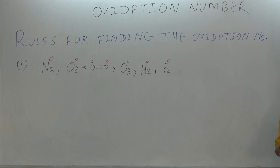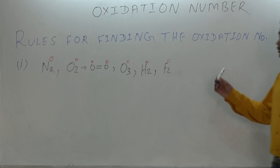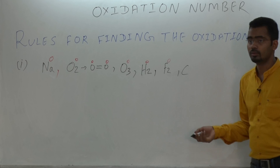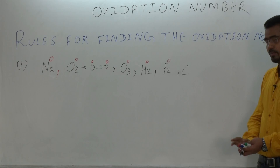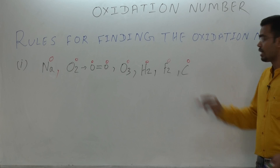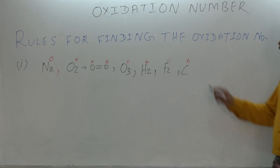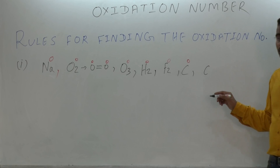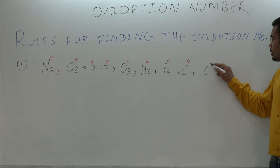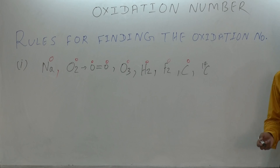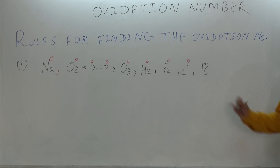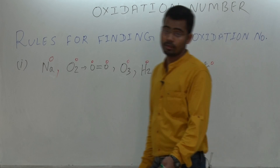If we have carbon alone, what is the oxidation state? It is alone, so it has zero oxidation state. And if we have Carbon-14, this is an isotope — what is the oxidation state? Zero. The oxidation state does not depend on the isotope.